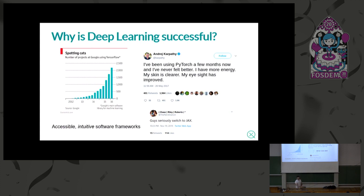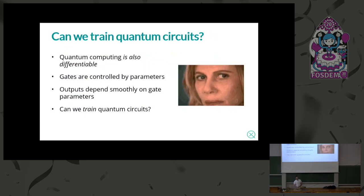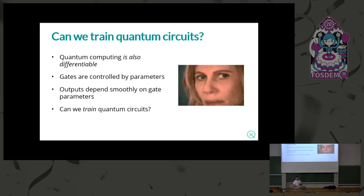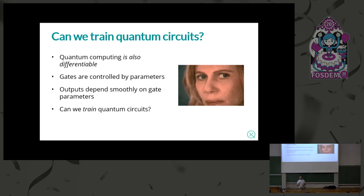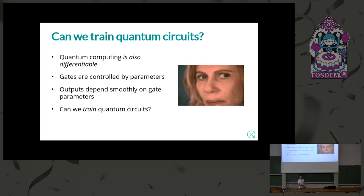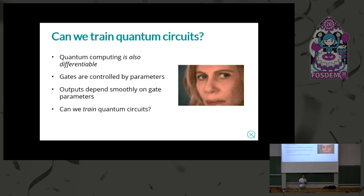So the question is: can we train quantum circuits? It turns out quantum computing is also differentiable. You have a small quantum circuit controlled by quantum gates. These gates take classical parameters; you perform a quantum computation on the hardware, perform a measurement at the end, and from those measurements you can compute measurement statistics — expectation values or variances. These are deterministic: the same parameters give the same output. So quantum circuits are differentiable; their outputs depend smoothly on gate parameters.